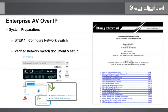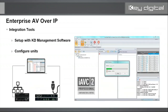Again, step one: configure the network switch first. Even if we set up all your units, if you plug everything in without configuring the network switch first you might have issues. Follow the link for the verified network switches document — for example, the Cisco IGMP setup link — it's about five pages long, mostly pictures, very easy. You don't have to be an IT specialist. We're also happy to set up your network switch for you if needed — just send it to Key Digital and talk to your sales rep first.